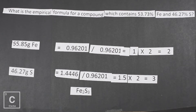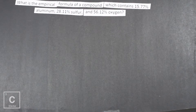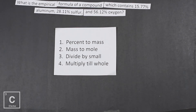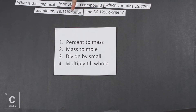The first time you see this you're like, what did she just do? So let's work another one. What is the empirical formula of a compound which contains 15.77% aluminum, 28.11% sulfur, and 56.12% oxygen? Let's remember those steps: percent to mass, mass to mole, divide by small, multiply till whole. If the problem gives you grams instead of percents, you can skip percent to mass — it's already in mass. But this one says percent, so we go through all of it.